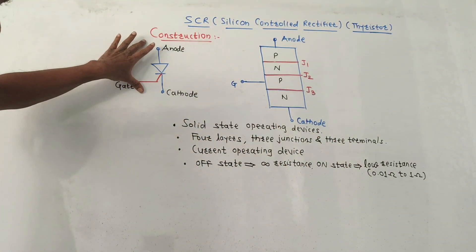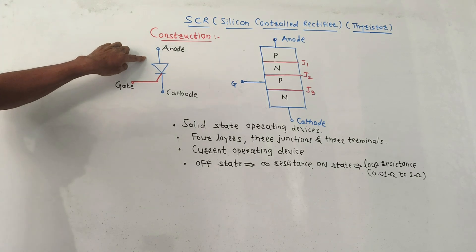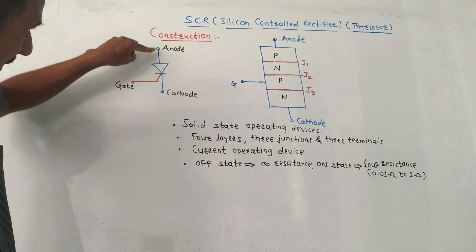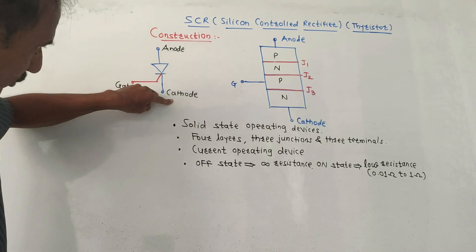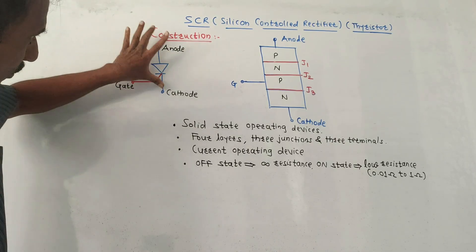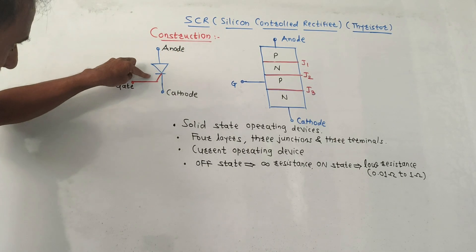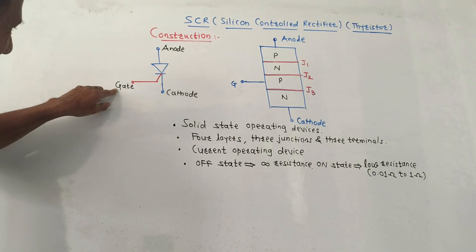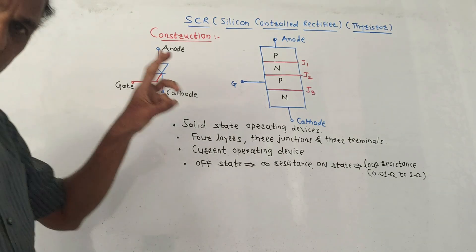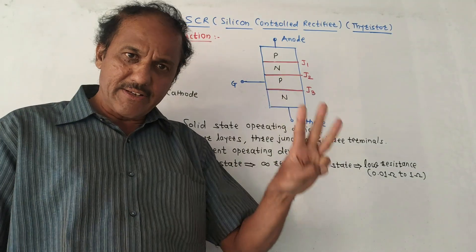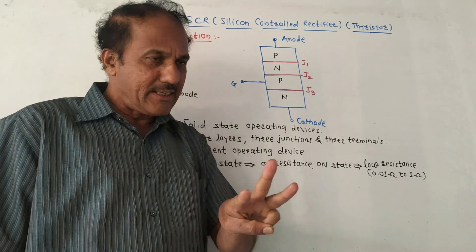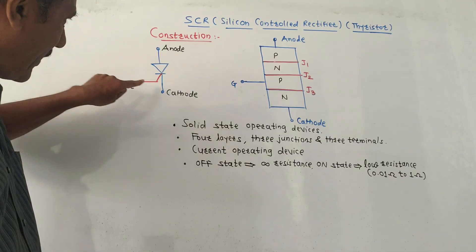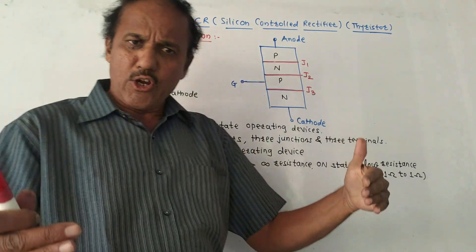This diagram shows the symbol of SCR, that is symbol of thyristor. It has basically three terminals: anode terminal, cathode terminal — which is similar to the diode — and one extra terminal compared to the diode, which is the gate terminal. So this device is basically a three-terminal device having anode, cathode, and gate.